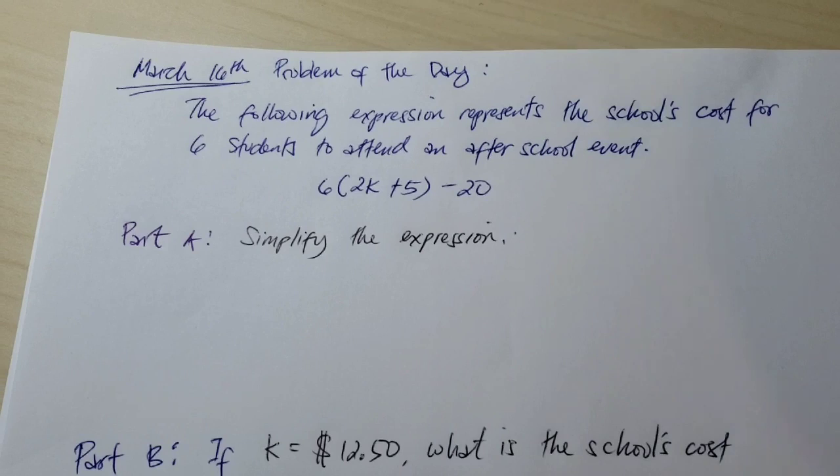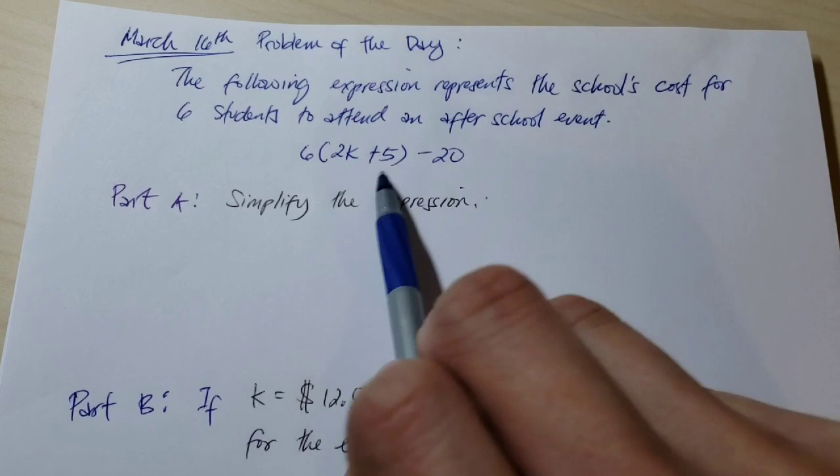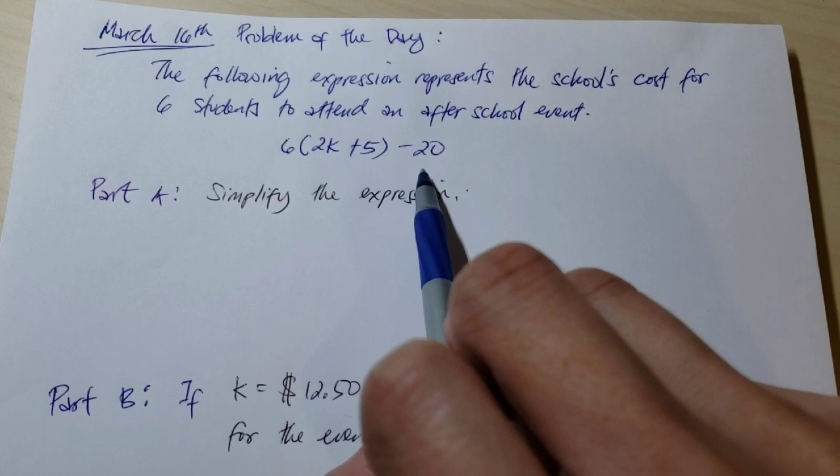Hello students, for the answer for today's problem of the day, the following expression represents the school's cost for six students to attend an after-school event: 6(2k + 5) - 20.